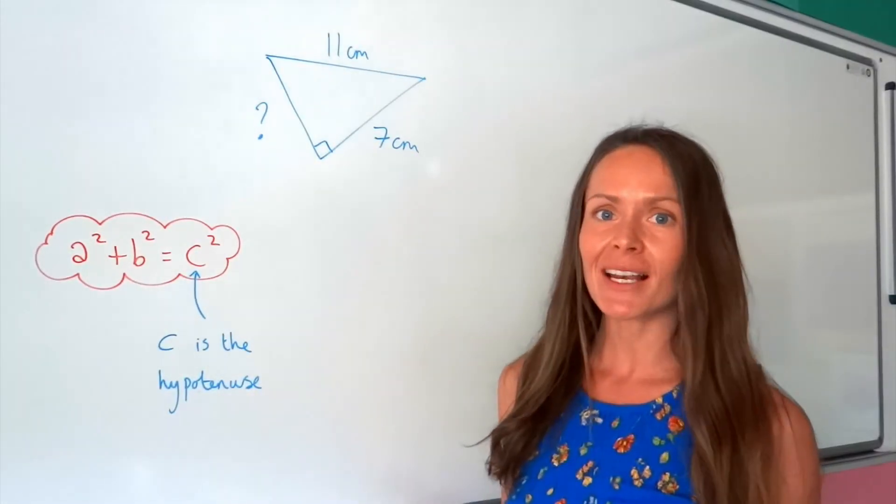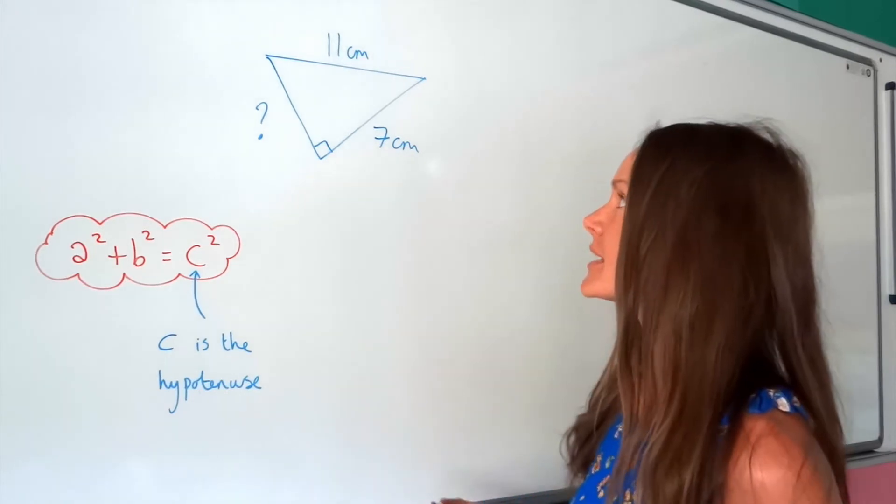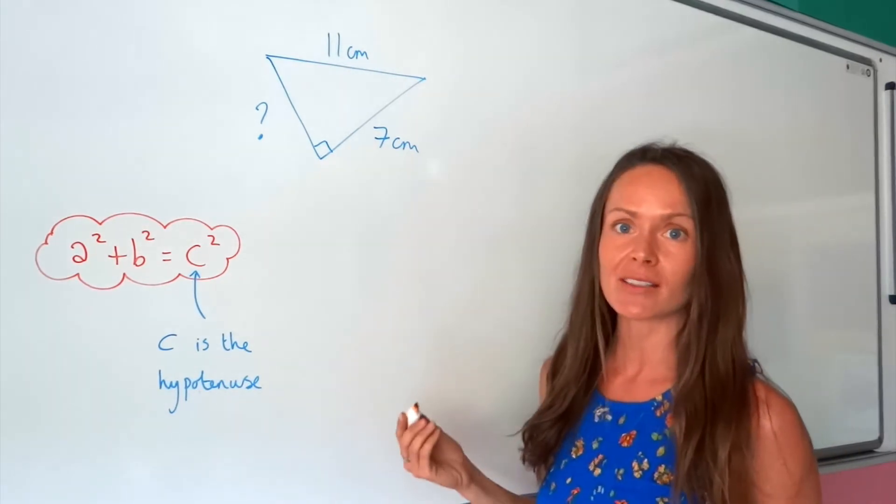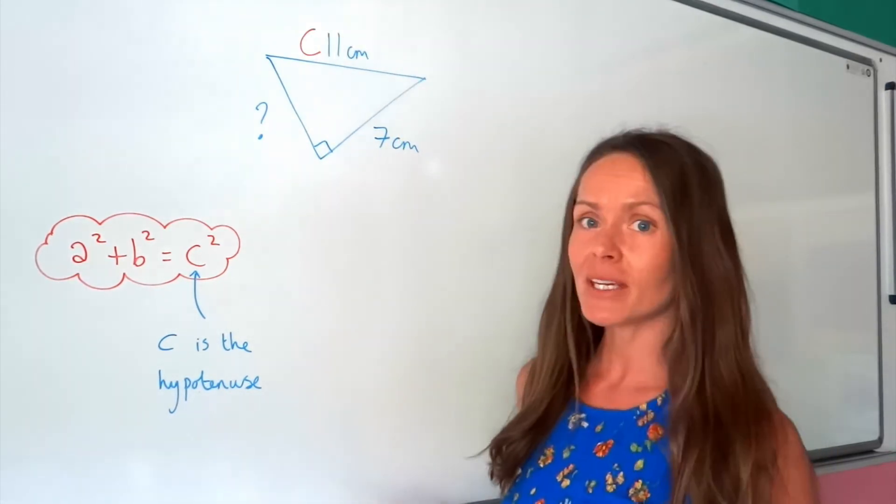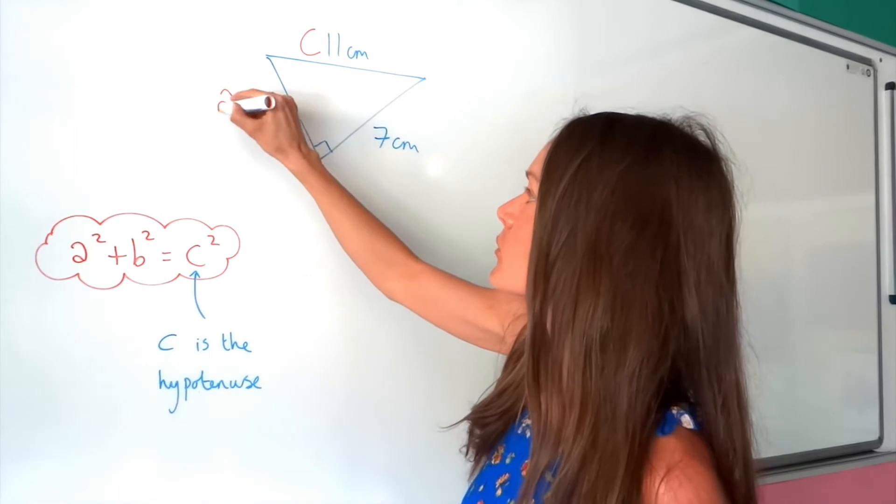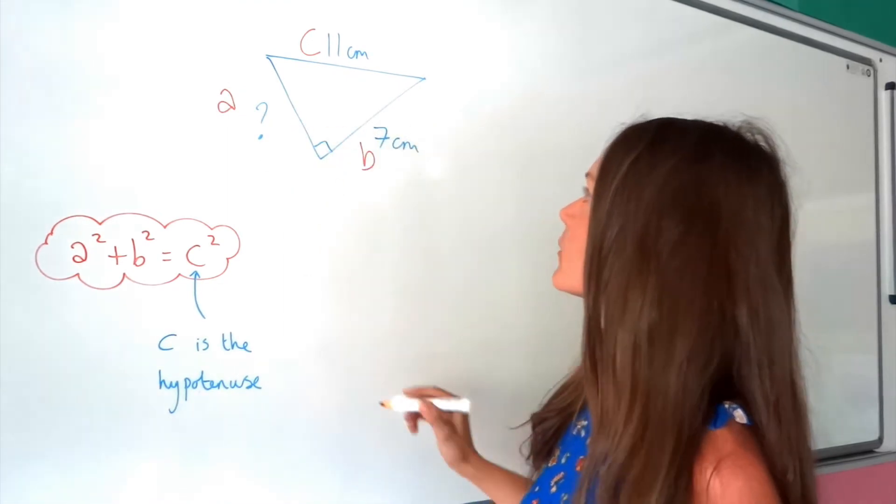Okay, so just like before, start by labelling your three sides, A, B and C. C being the longest side, the hypotenuse, which is opposite the right angle, so that one there. A and B, doesn't matter which way round you label those two. So I'm just going to label that one A and that one B.